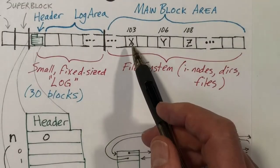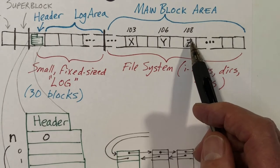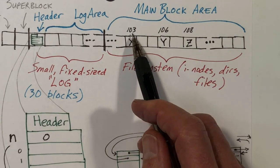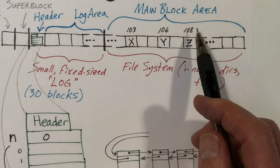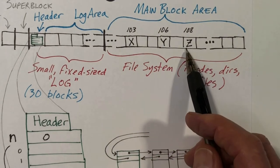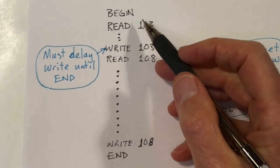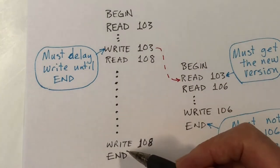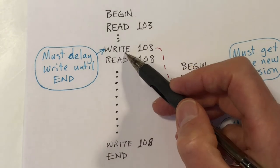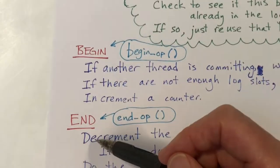I'm also showing individual blocks in the main block area. Blocks 103, 106, and 108 contain some initial data. Here is the example we're going to be walking through — every transaction begins with begin_op and ends with end_op and can contain reads and writes. Let's take a look at what all these operations do: read, write, begin, and end.